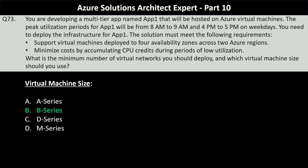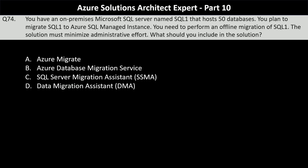Question number 74. You have an on-premise Microsoft SQL Server named SQL 1 that hosts 50 databases. You plan to migrate SQL 1 to Azure SQL Managed Instance and need to perform an offline migration. The solution must minimize administrative effort. Your options are Azure Migrate, Azure Database Migration Service, SQL Server Migration Assistant, or Data Migration Assistant.